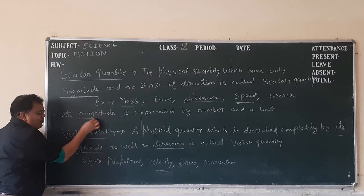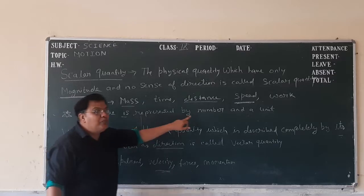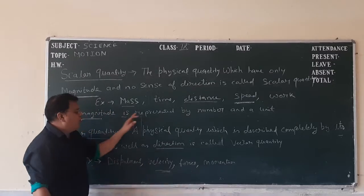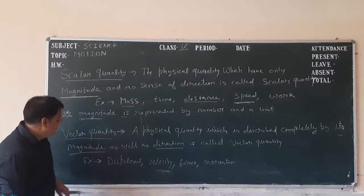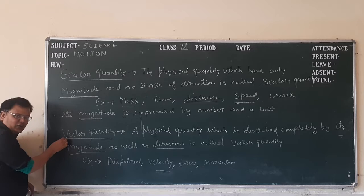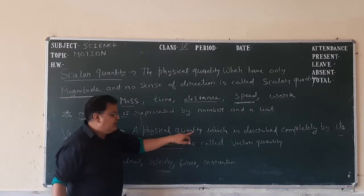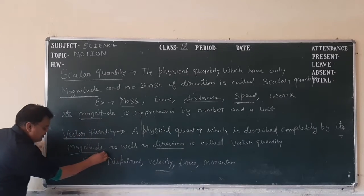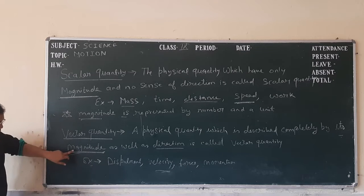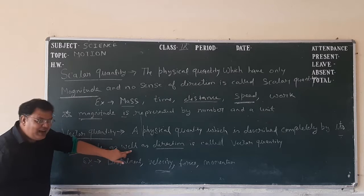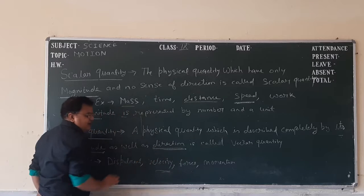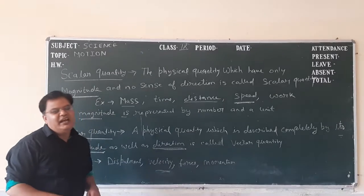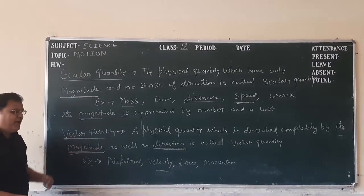Magnitude means we perceive it by a number and a unit — it means 4, 5, 6. Okay, magnitude is expressed by number. Now we come to another quantity: vector quantity. A physical quantity which is described completely by its magnitude as well as direction — that type of quantity is known as vector quantity.